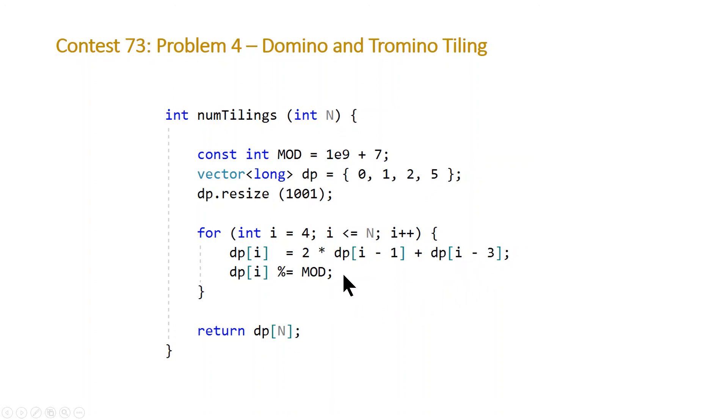And we have to make sure we are taking the modulus of this at each step so that we don't overflow our integer or our long value. And at the end, we just return dp of n. And of course, this solution is going to be linear because we only have one loop, so it'll be linear in the size of our input.